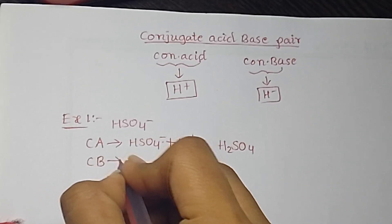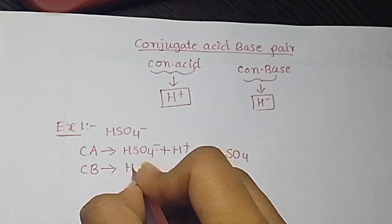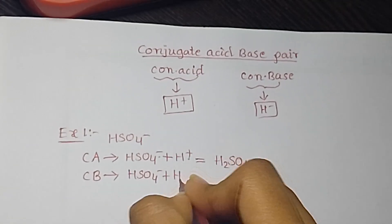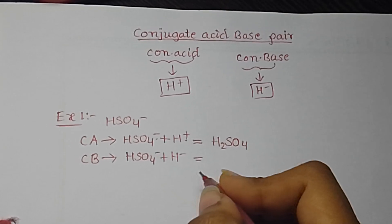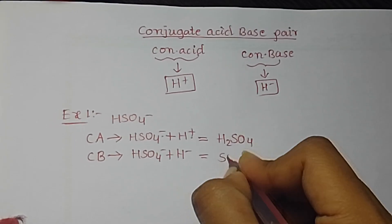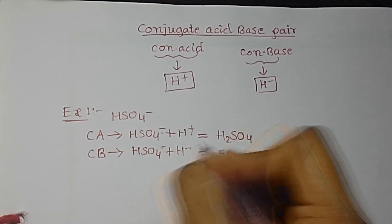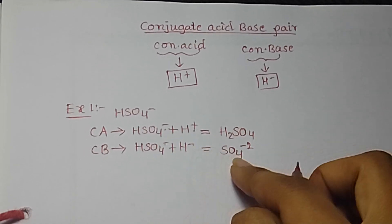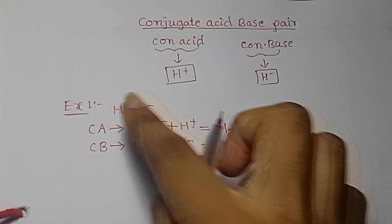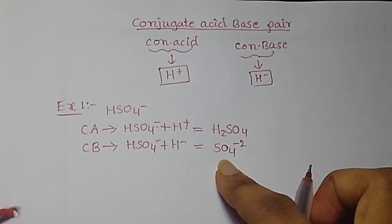Next, conjugate base. What is the conjugate base of HSO4 minus? HSO4 minus plus H minus, means one H is subtracted. So what do we get? SO4 minus minus equals minus 2. Minus 1 plus minus 1 equals minus 2. So the conjugate base of HSO4 minus is SO4 2-.